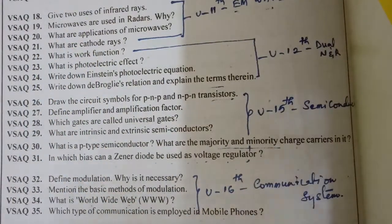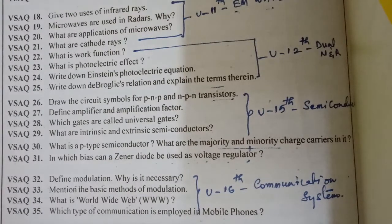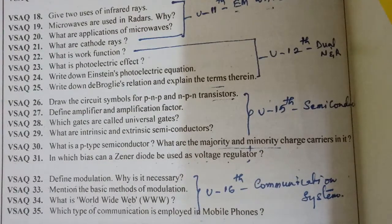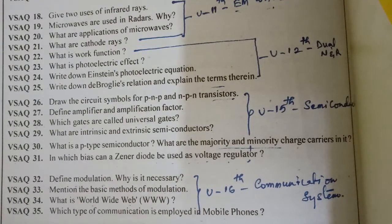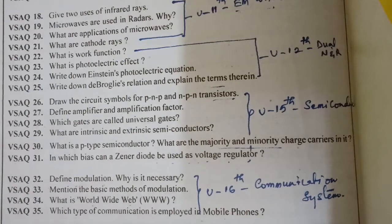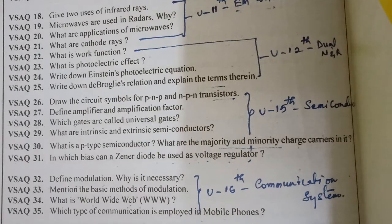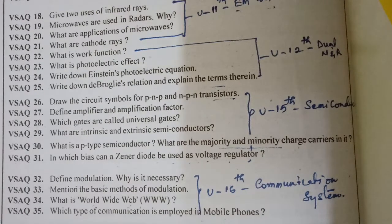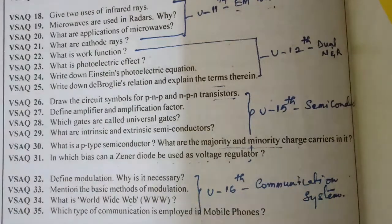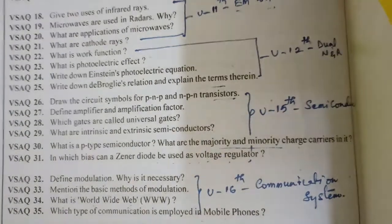The questions cover ray optics, magnetism, moving charges and galvanometer, AC current, electromagnetic waves, dual nature of radiation and matter, semiconductors, and communication systems. In the next class we will see the answers for these questions. Please do subscribe my channel for more updates. I will make regular classes for board of intermediate secondary. Thank you so much for watching. Thank you, bye.